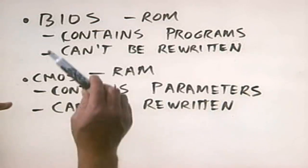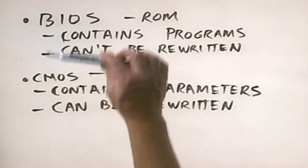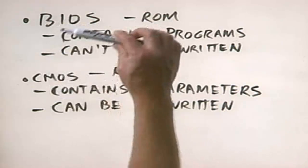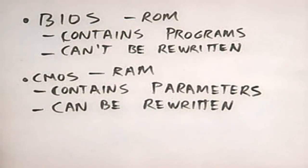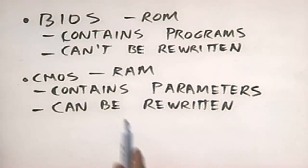Together, these two components are sometimes called just the CMOS or just the BIOS. But whenever you hear that, assume they're talking about two different discrete parts. If someone says they need to get into the BIOS to change a hard drive parameter, you can note that you actually can't access the BIOS directly to change anything — you're actually changing it in the CMOS.